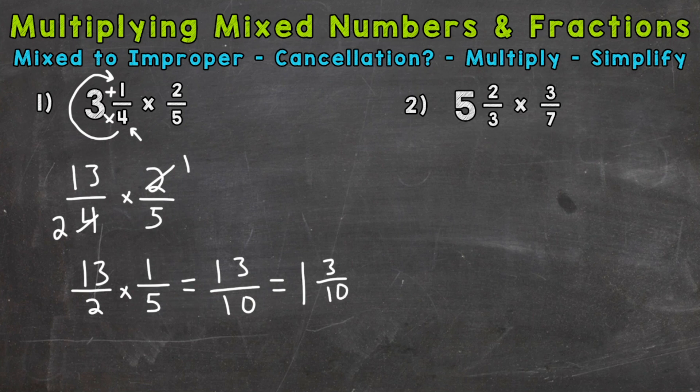Always check to see if you can simplify the fractional part of a mixed number. But in the case of number one, three tenths is simplified. So our final answer is one and three tenths. I do want to show you before we move to number two, let me rewrite the problem below here.